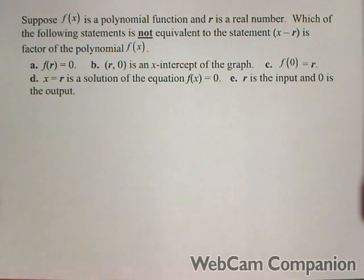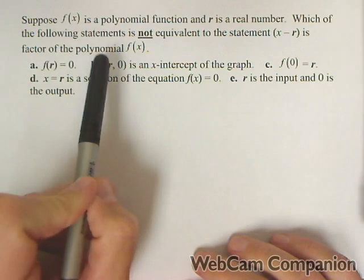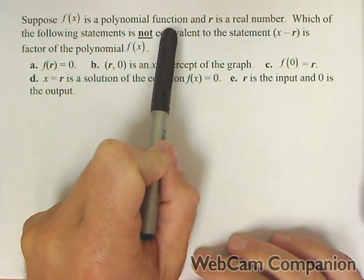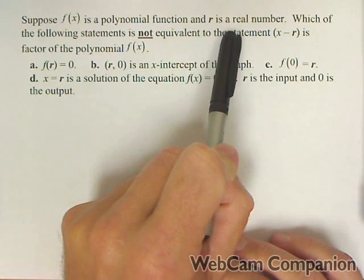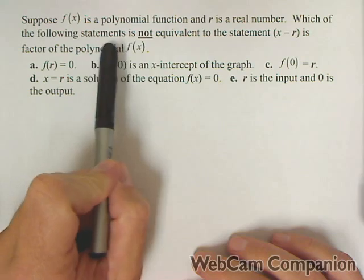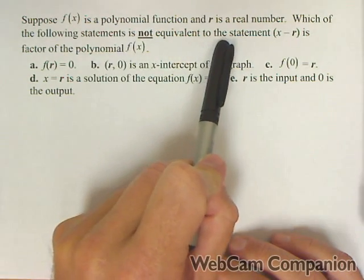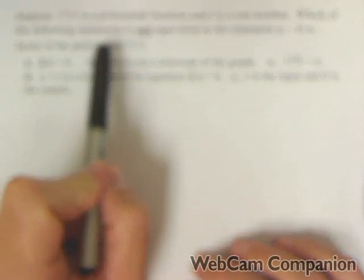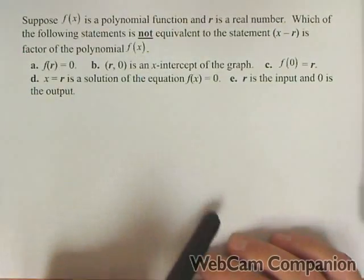So for this problem, we're talking about polynomials. Suppose f of x is a polynomial function and r is some real number. Which of the following statements is not equivalent to the statement that x minus r is a factor of the polynomial f of x?